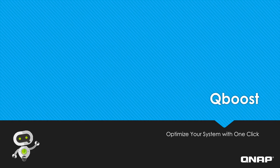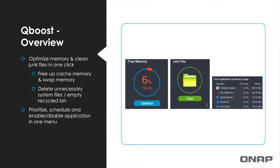So let's talk about QBoost. Let's take a closer look at how QBoost works. QBoost optimizes your memory by freeing up cache memory and swap memory, and frees up storage space by deleting unnecessary system files and emptying the recycle bin.